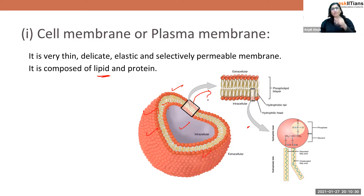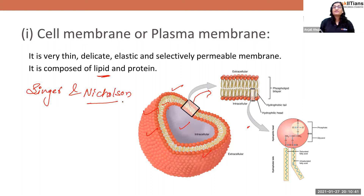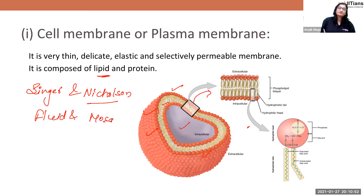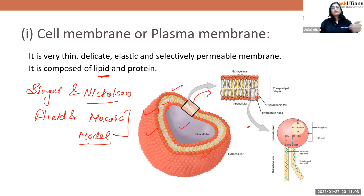Two scientists named Singer and Nicholson gave a model for the structural organization of the cell membrane, known as the Fluid Mosaic Model. Mosaic means network — this membrane looks like a network. Fluid means it has fluid properties: like water, when hit, the molecules settle back to normal. That is the fluid property, and that's why we call it the Fluid Mosaic Model.